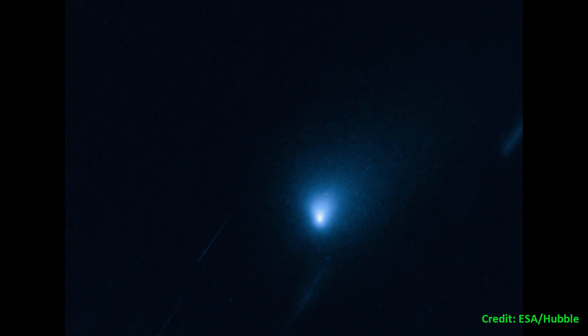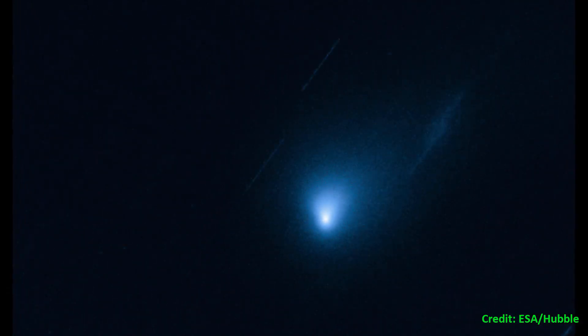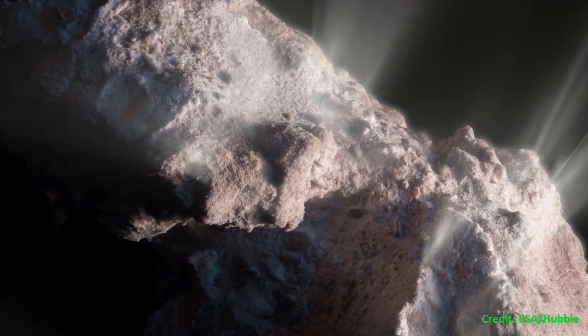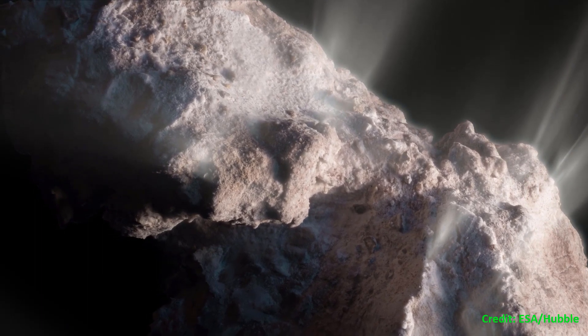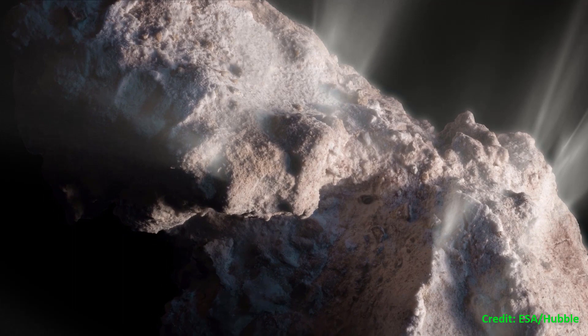In 2019, Hubble provided astronomers with their sharpest and best observation to date of the interstellar visitor comet 2I Borisov, which is believed to have arrived here from another planetary system elsewhere in our galaxy.